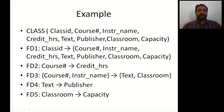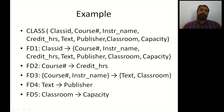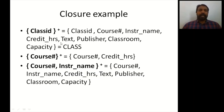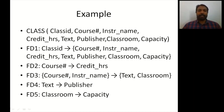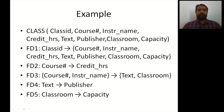We will see another example. We have a relation 'class' with attributes: class_id, course_number, instructor_name, credit_hours, text, publisher, classroom, and capacity. There are five functional dependencies: class_id → {all attributes}, course_number → credit_hours, course_number, instructor_name → {text, classroom}, text → publisher, classroom → capacity. To find class_id closure, we add class_id to X+ and check each functional dependency. Since class_id is a subset of itself, all those attributes are added.